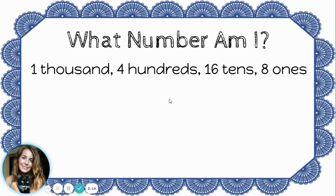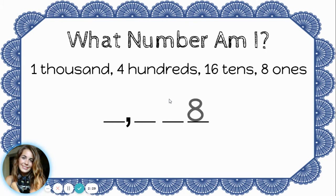Let's try another one. This time I have one thousand, four hundreds, sixteen tens, and eight ones. So here is my ones, tens, hundreds, and thousands places. Let's start filling in our digits: eight ones, sixteen tens, four hundreds, one thousand.